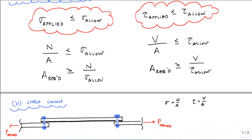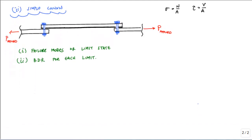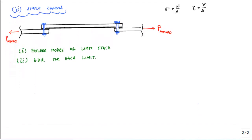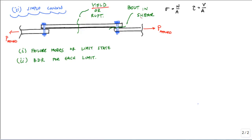Let's take a look at a simple connection. When you have a connection or any structural system, you have to consider how it could fail — every possible failure mode is called a limit state. Looking at this simple connection with the given loading, there are two limit states we'll focus on: the bolt could fail in shear, or any of the connected bars could yield or rupture. We'll examine the basic design relationship for each of these limit states, focusing on yielding and shear in the bolt.